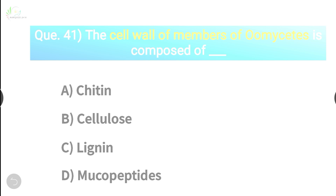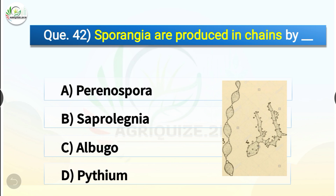Question number forty-two: Sporangia are produced in chains by the options are Peronospora, Saprolegnia, Albugo, or Pythium. The correct answer is option C, Albugo. Sporangia are produced in chains by Albugo. Albugo is unique in that its lemon-shaped sporangia are produced in basipetal chains at the tip of clavate sporangiophores.